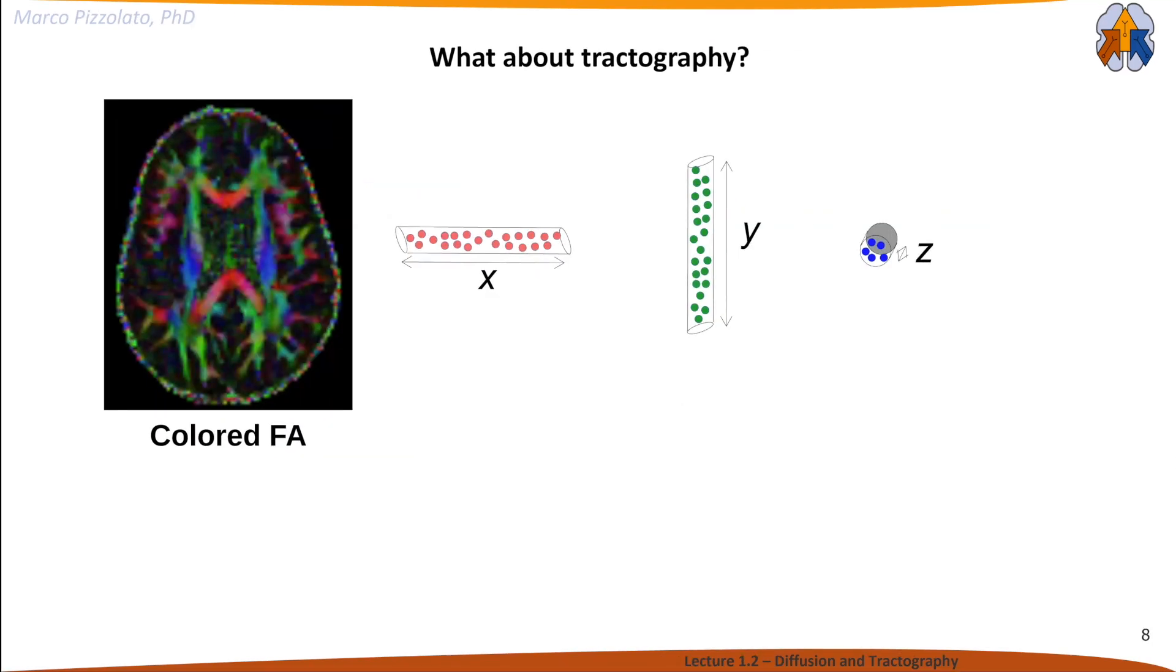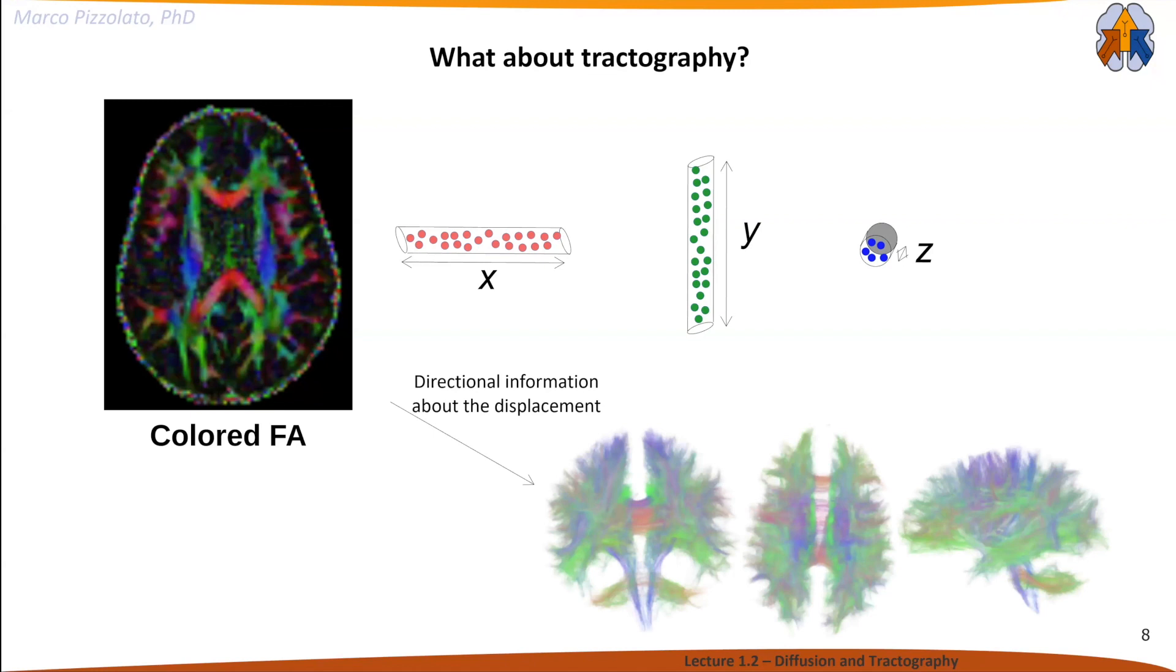Diffusion imaging also gives us directional information. This is the same image but color-coded based on the principle direction along which water particles diffuse. Red corresponds to the x direction, green to the y direction (nose to back of head), and blue to the z direction (neck to top of head). This is the same directional information and color coding we use when generating tractography.